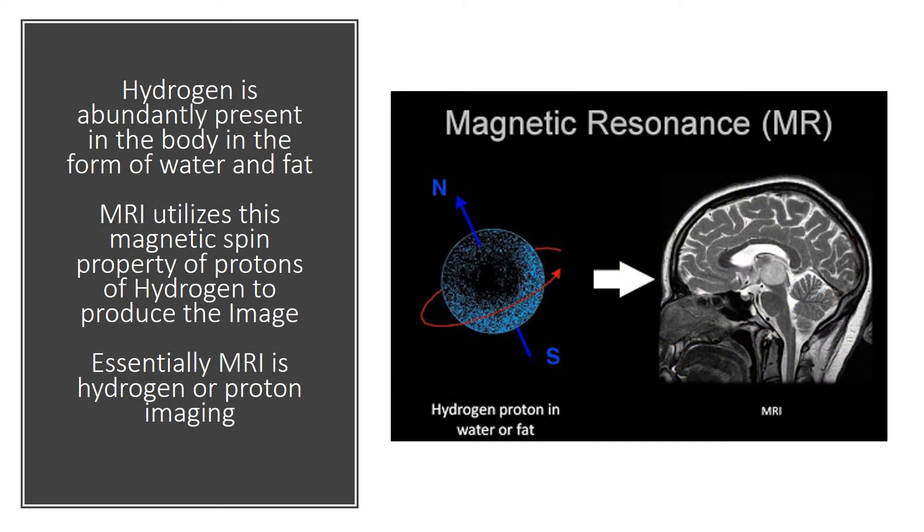Hydrogen is abundantly present in the body in the form of water and fat. MRI utilizes this magnetic spin property of protons of hydrogen to produce the image. Essentially, MRI is hydrogen or proton imaging.